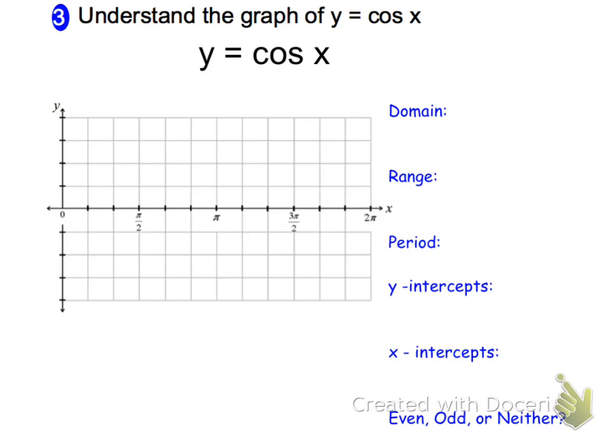Once again, the x values are our angles off the unit circle, but this time we are looking at the x values as opposed to the y values. And again, our high point on the graph here is going to be positive 1, and the low point will be a negative 1. So let's go ahead and start graphing.